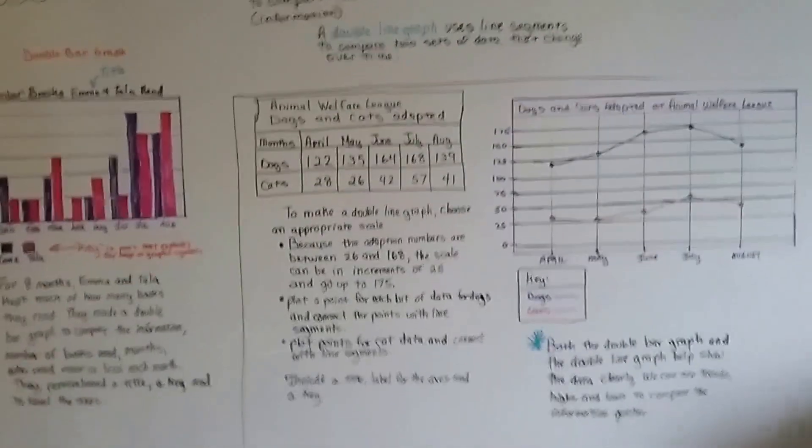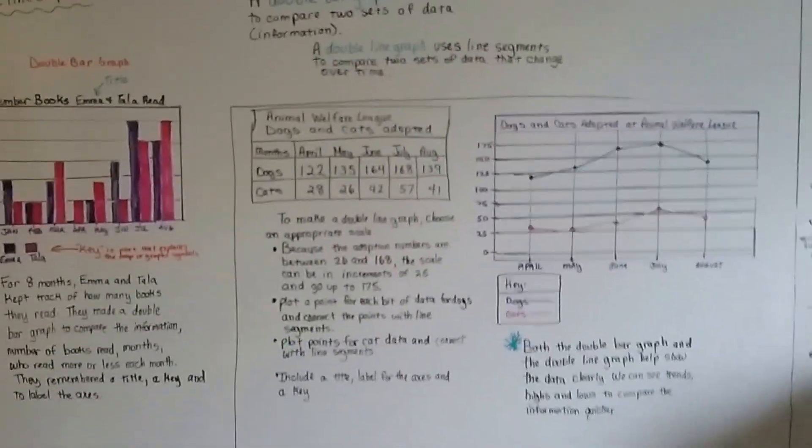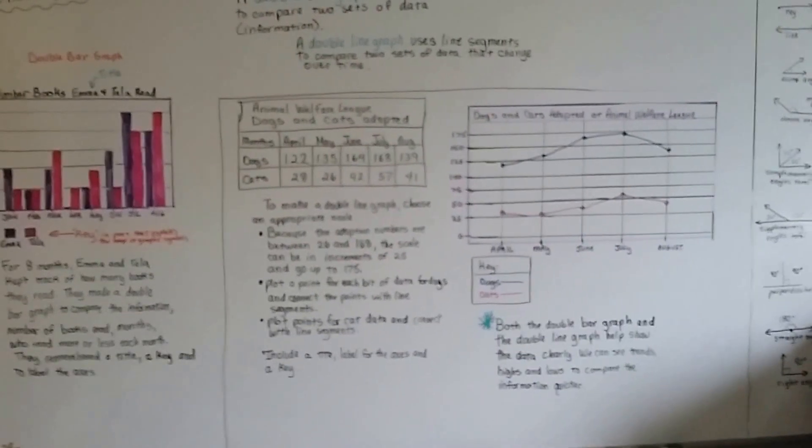So that's a double bar graph and that's a double line graph. And that's how to make them. Make sure you remember all the parts.